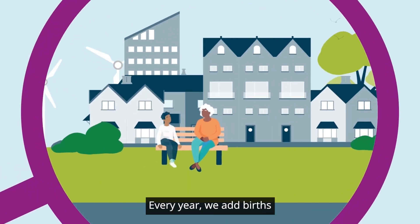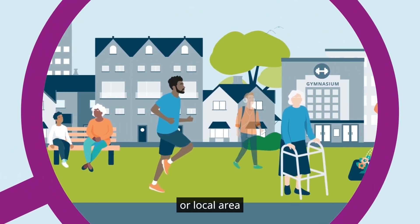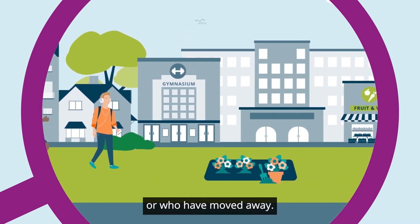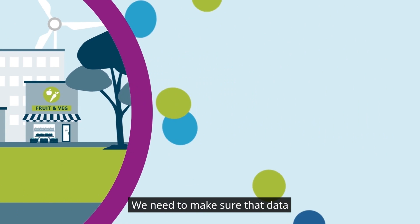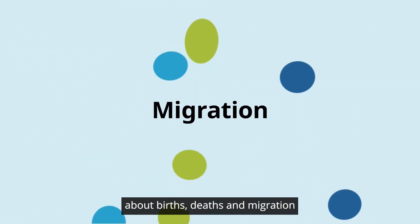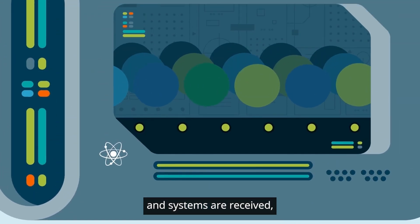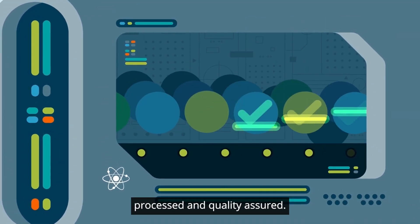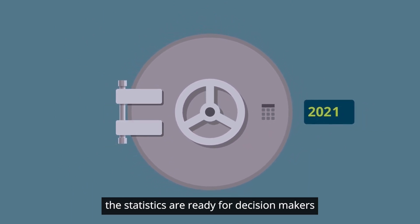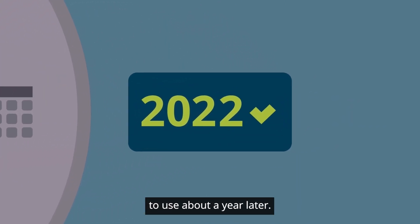Every year, we add births and people who move into the country or local area, and remove people who have died or who have moved away. We need to make sure that data about births, deaths and migration from numerous data sources and systems are received, processed and quality assured. When this is done, the statistics are ready for decision makers to use about a year later.